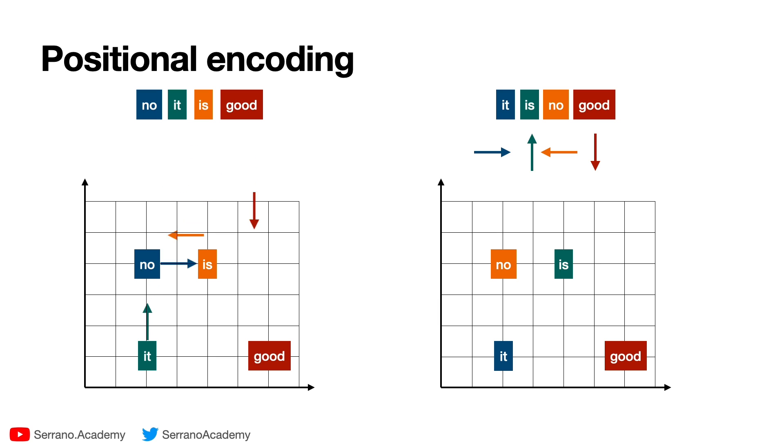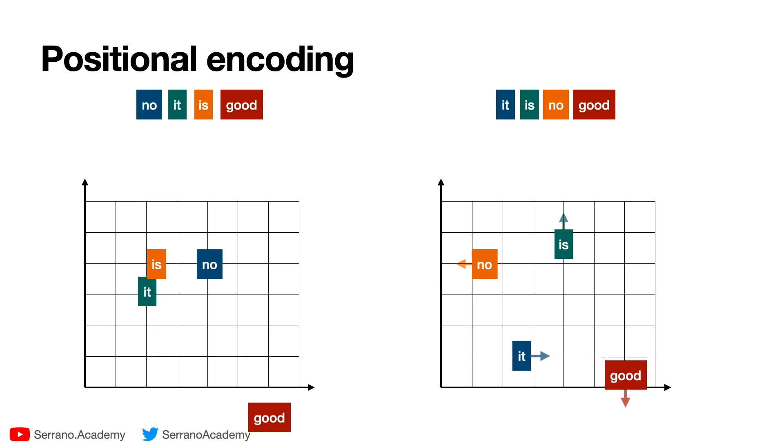So when we move the words in the right and left based on their directions, then on the left we get this and on the right we get this, which at the very least is different. The model still doesn't know what each thing is, but at the very least we've been able to tell them apart.